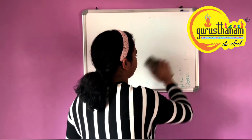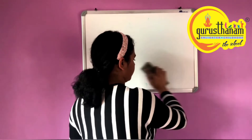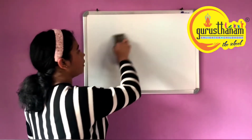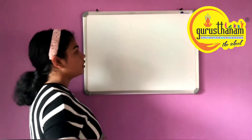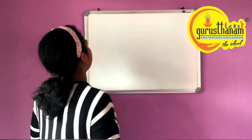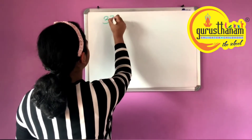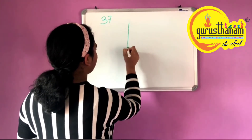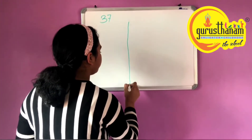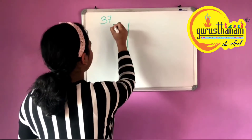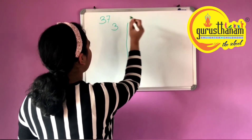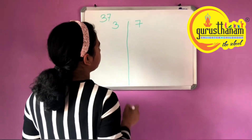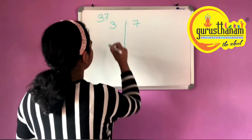37. For the 37 times table, we write the 3 times table and the 7 times table in separate columns.